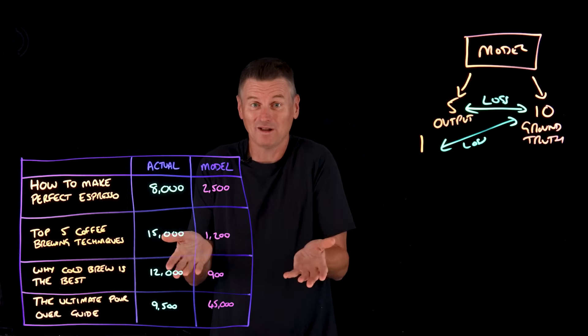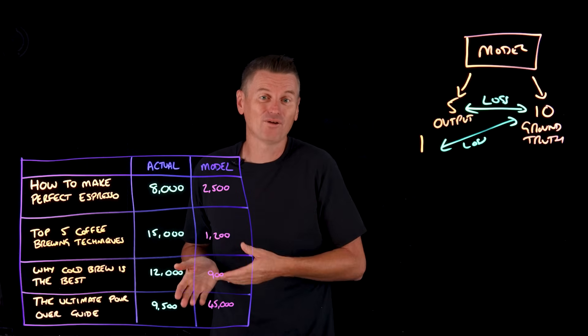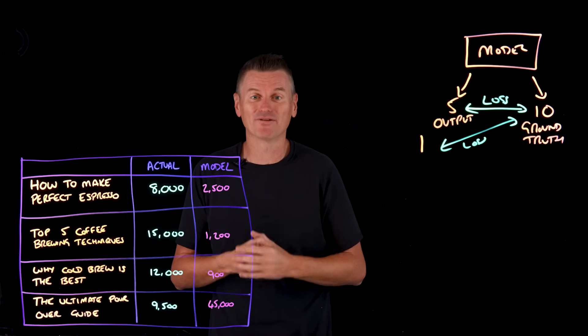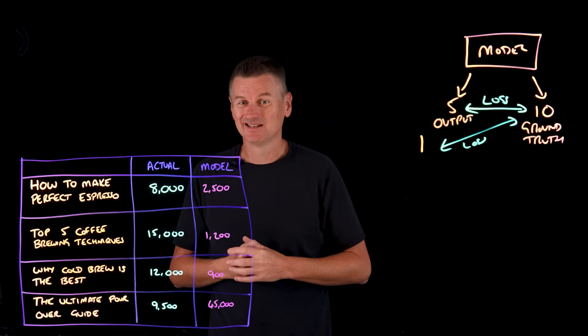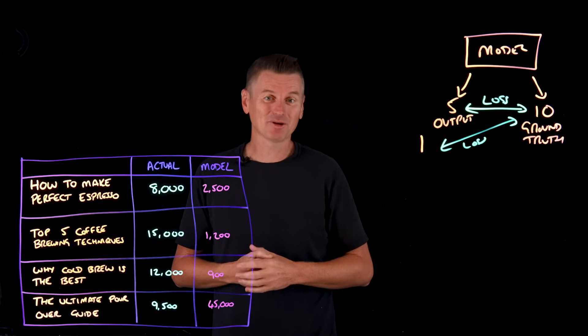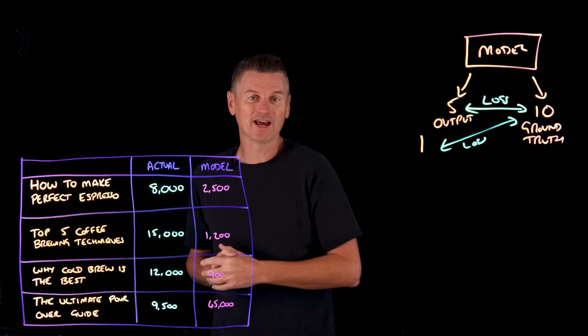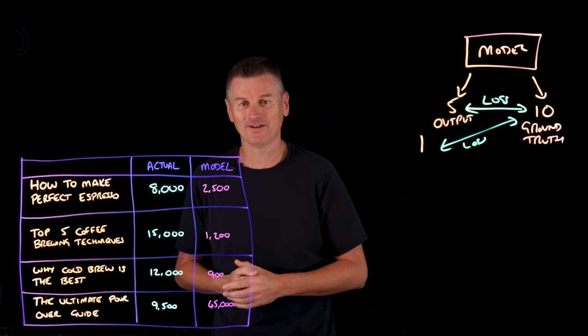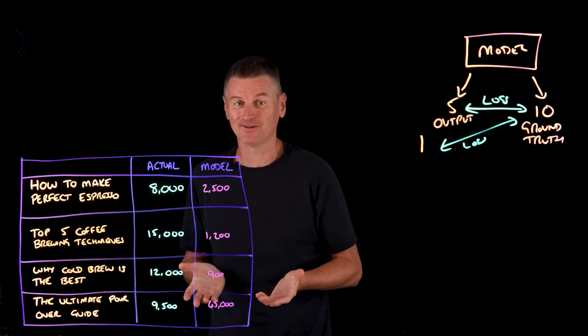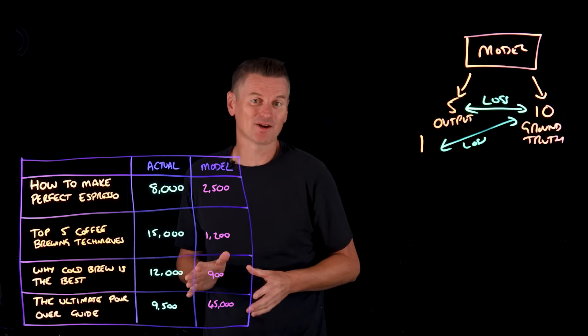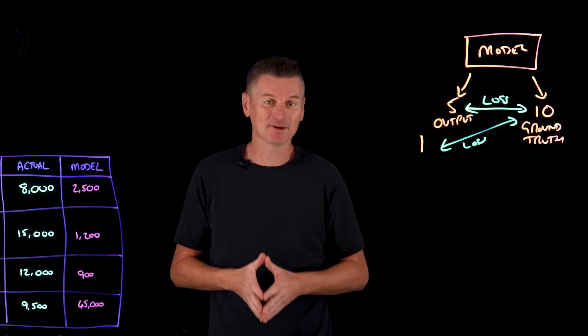Now how well did the model do? When comparing the model forecasts to the actual number of real YouTube views, the model wasn't getting too close. The model predicted that the cold brew video would bomb and the pour over guide video would be a big hit. Just wasn't the case though. Now this is a hard problem to solve.